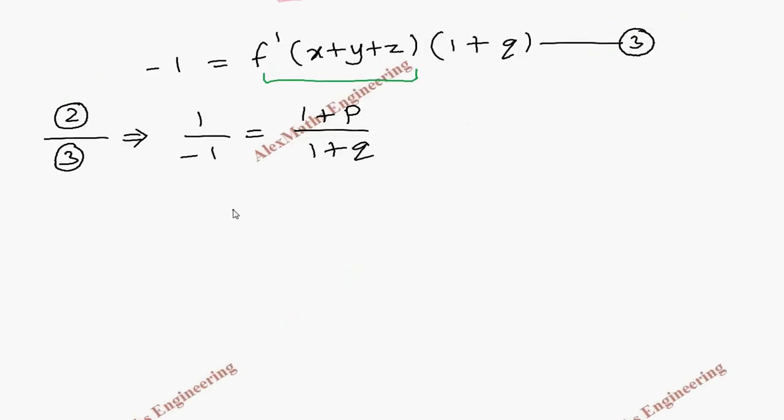Now we have to cross multiply. So 1 plus q equal to minus 1 minus p. Bringing p here, then q here, and this one to the other side, we get minus 1, minus 1, minus 2. So this is our partial differential equation, which is obtained by eliminating the arbitrary function.